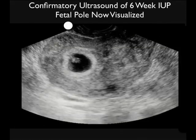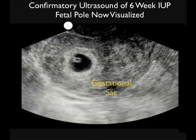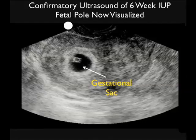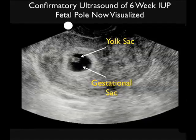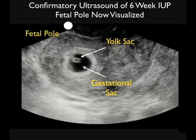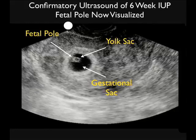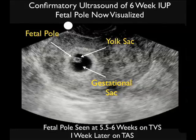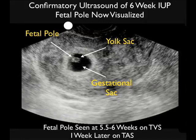Here we see a pregnancy that is a bit further advanced. We have a larger gestational sac — the darker, hypoechoic area within the fundal region of the uterus. Inside we see the positive yolk sac, or cheerio. And just to the left of the yolk sac, we see a tiny fetal pole. Zooming in on that fetal pole, we can make out the flicker of a heartbeat — a definitive intrauterine pregnancy. The fetal pole is seen at about 5.5 to 6 weeks on transvaginal sonography and about a week later on transabdominal sonography.